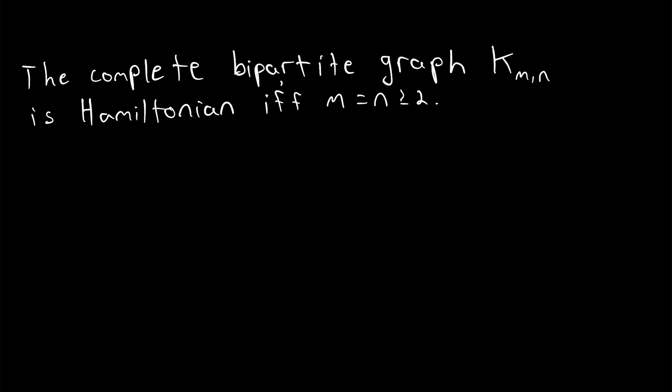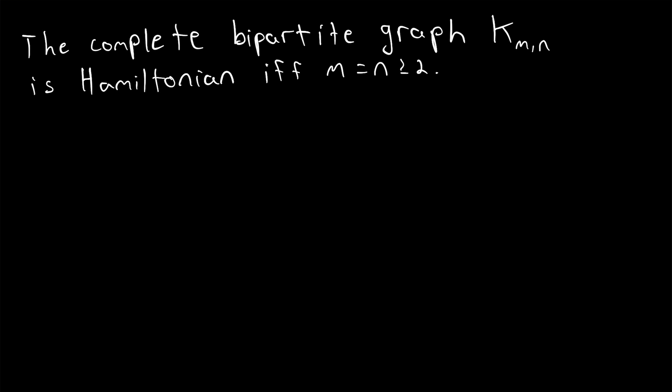So we will of course prove both directions of this statement because it is an if and only if theorem. We'll start off with the easier direction where we have a complete bipartite graph with partite sets that have the same number of vertices, where m and n are equal and they are greater than or equal to 2.